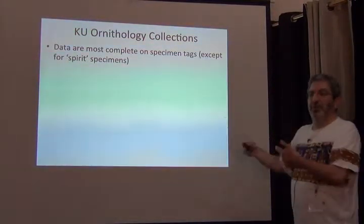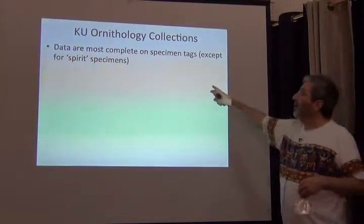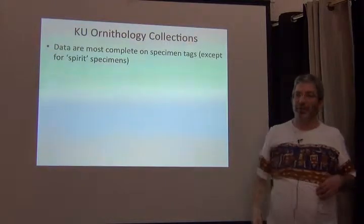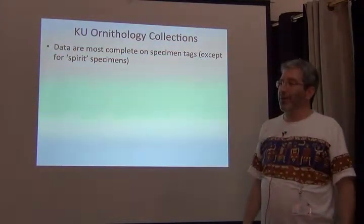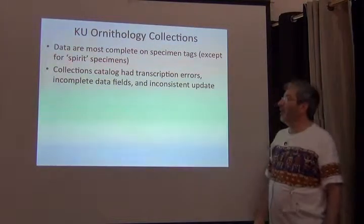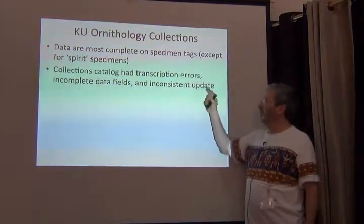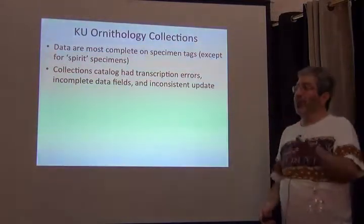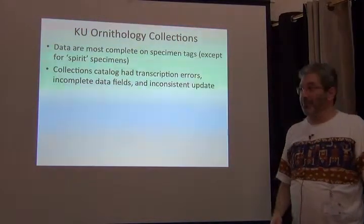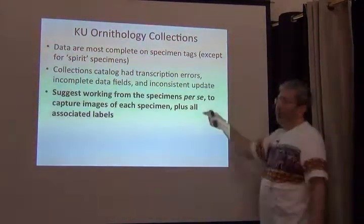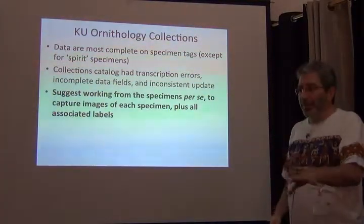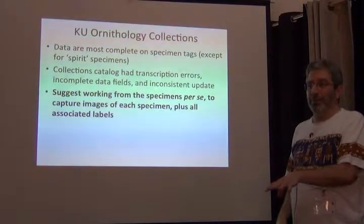So these are the conclusions: I want to stick with the specimen tags, except for specimens in alcohol — there I think the data are better in the ledgers. The ledgers had transcription errors, incomplete data fields, and inconsistent updates, so I want to use those as seldom as possible, but I'll probably use them for the pickles. My end strategy is to work from the specimens — it's going to be awkward, it's going to be slow, but it's best.